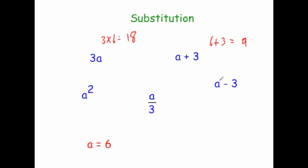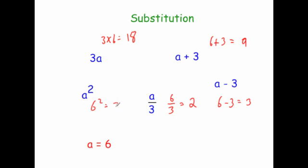Next, a take away 3: a is equal to 6, so we've got 6 take away 3, which is equal to 3. Next, a divided by 3: that's 6 over 3, and 6 divided by 3 is equal to 2. And finally, a squared: a is equal to 6, so that's 6 squared, and 6 times 6 is equal to 36.